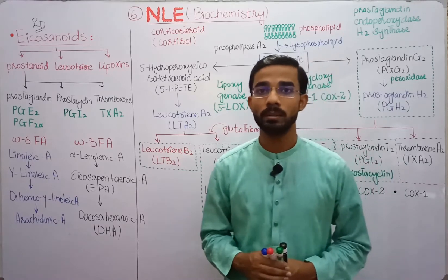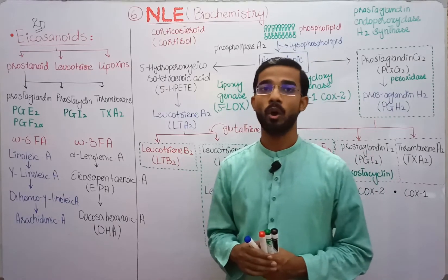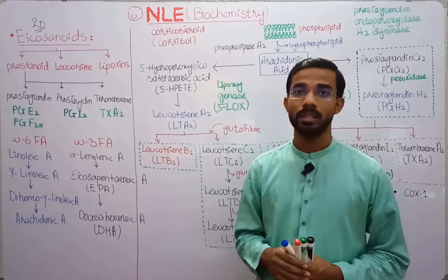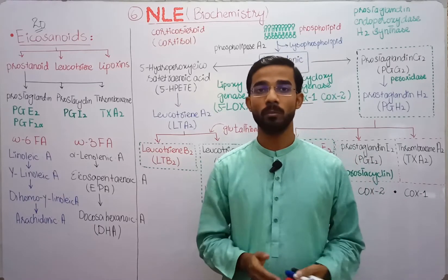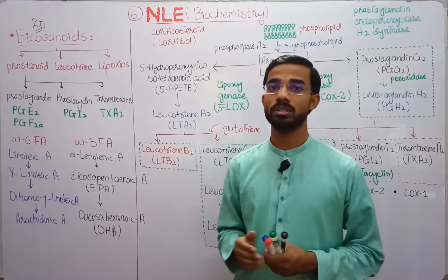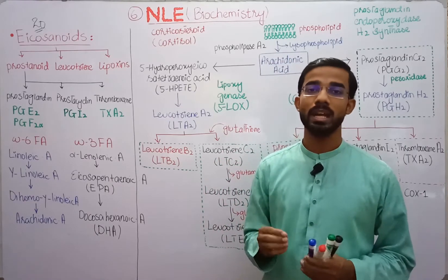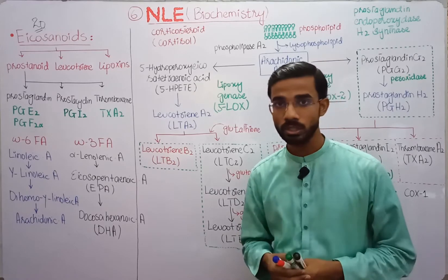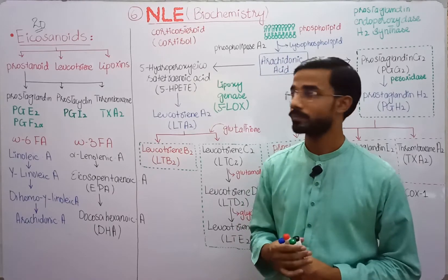These may act as a hormone, but there is a difference between hormones and Eicosanoids. Eicosanoids are actually produced in almost all tissues and they act locally.